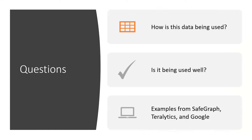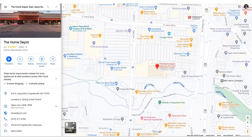The questions we wanted to address today are: how is this data being used, and how can it be used for COVID-19 tracking? Is it being used well — not just effectively or efficiently, but ethically? We're going to answer those questions by looking at examples from SafeGraph, from Teralytics (a Swiss company), and from Google. First up is Google.